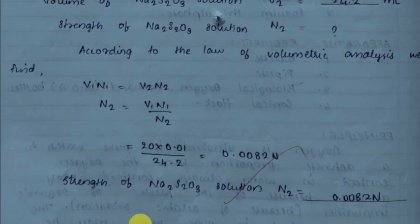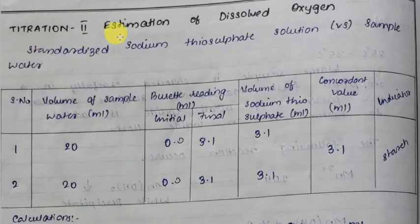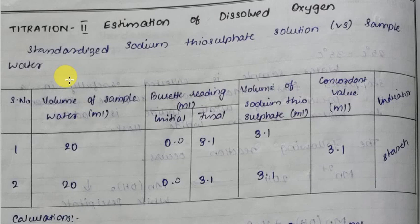Now for the estimation of dissolved oxygen, Titration 2: standardized sodium thiosulfate versus the water sample. Collect the water sample in an iodine flask, add alkaline iodide and manganese sulfate, which forms manganese hydroxide. Iodine is liberated. Take 20 ml of the sample in a measuring cylinder, add sodium thiosulfate immediately, then add starch indicator.